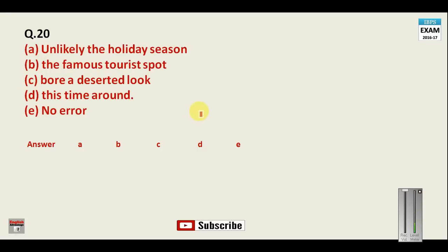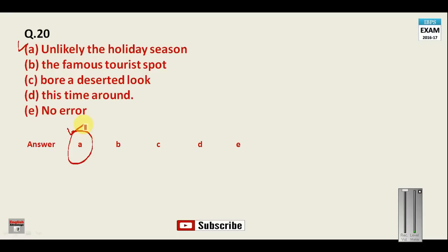Question number twenty: 'Unlikely the holiday season, the famous tourist spot bore a deserted look this time around.' In place of 'unlikely' you must say 'unlike.' There are two phrases — 'like something' means similar to it, and 'unlike' means the opposite. 'Unlike,' being an adjective preceded by a noun, gives us 'unlike the holiday season.' Your answer for question number twenty is A. That brings us to the end of this mock test.